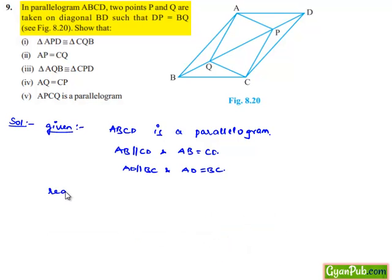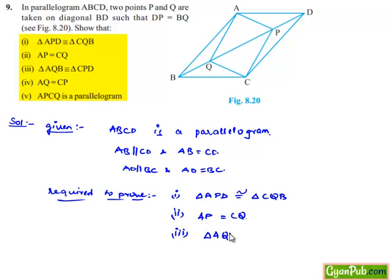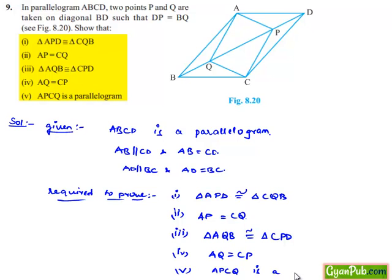We are asked to prove: first, triangle APD is congruent to triangle CQB; second, AP is equal to CQ; third, triangle AQB is congruent to triangle CPD; fourth, AQ is equal to CP; and lastly, APCQ is a parallelogram.